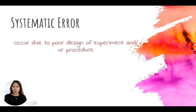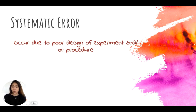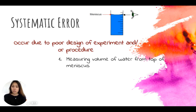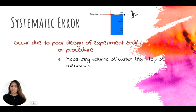Systematic error usually occurs due to poor design of experiment and/or your procedure. For example, you could be measuring the volume of water from the top of the meniscus — not the correct way — but measuring it that way every single trial. If that's the case, that would be a systematic error.